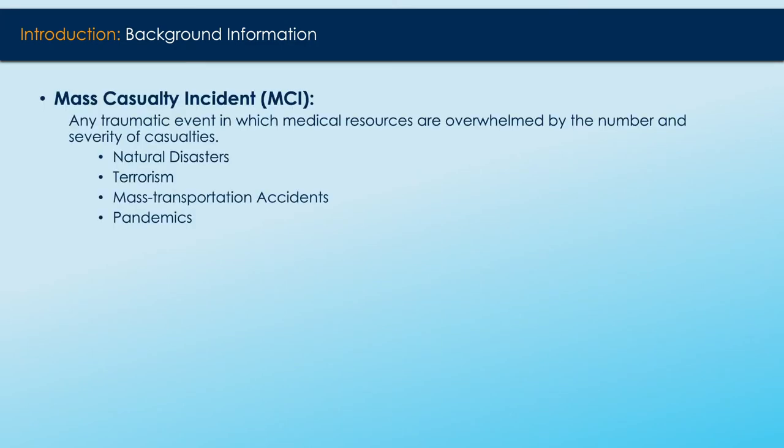A mass casualty incident, or MCI, is classified as any traumatic event in which medical resources are overwhelmed by the number and severity of casualties. MCIs can be of both natural and man-made origin and are of increasing concern to the medical sector. Examples include natural disasters, terrorism, mass transportation accidents, and one we are too familiar with at the moment — pandemics.